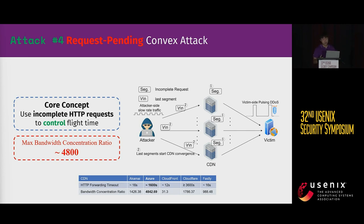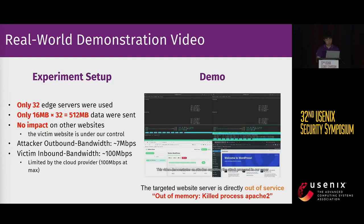At that point, all nodes receive the complete HTTP request and will forward it to the origin server simultaneously, causing huge bandwidth pressure on the victim. With this enhancement, we were able to push the ratio to a maximum of several thousands.